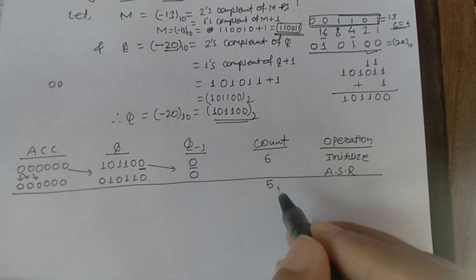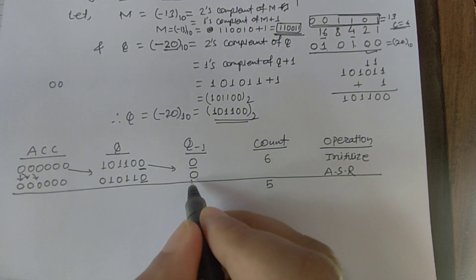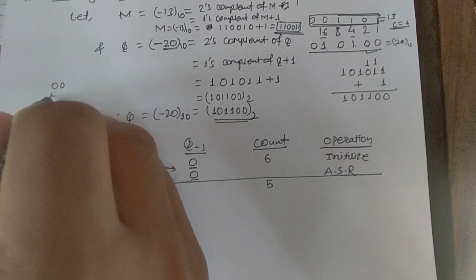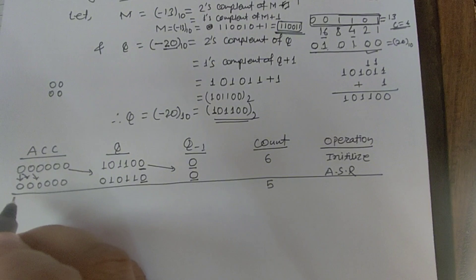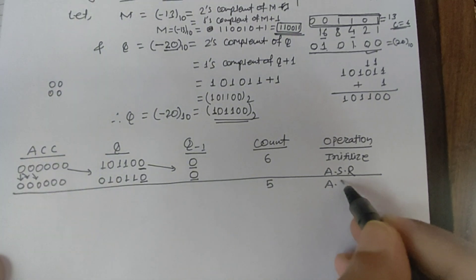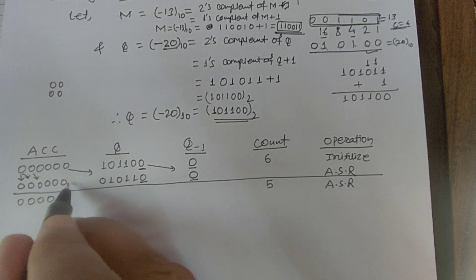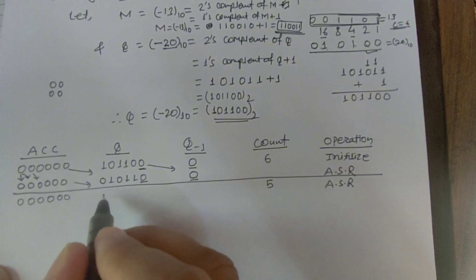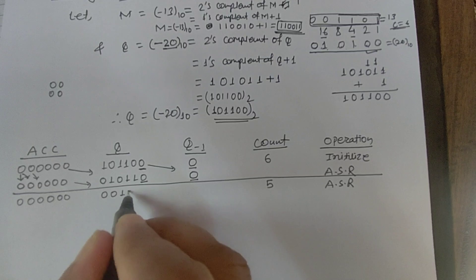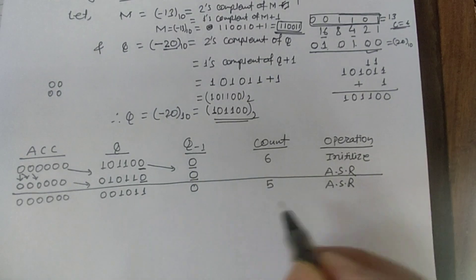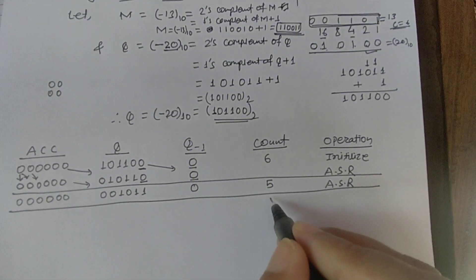In step 2, we check Q LSB and Q-1 again; the combination is once again 00, so we perform another ASR. After shifting all register values right, Q becomes 001011. This step is complete and count is decremented to 4.